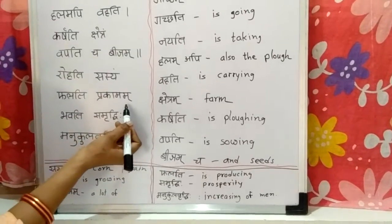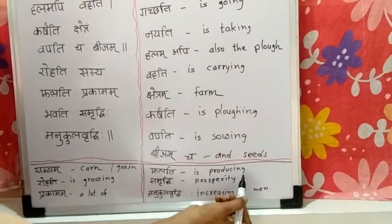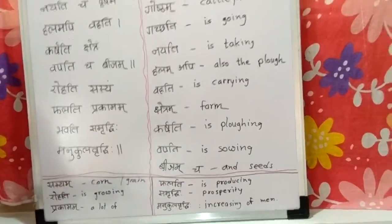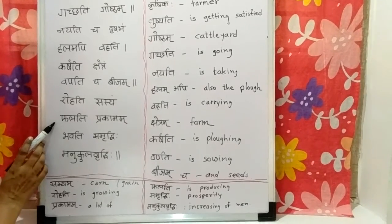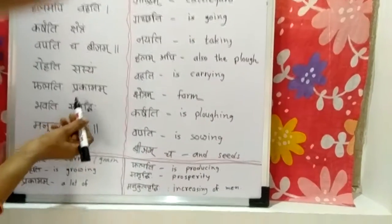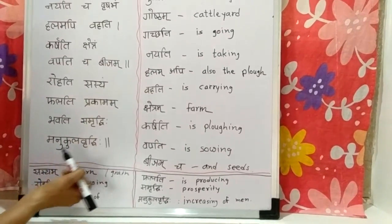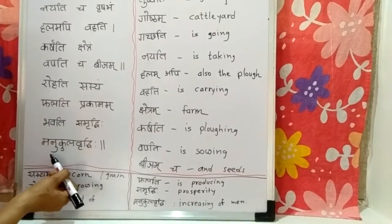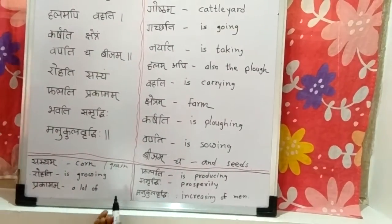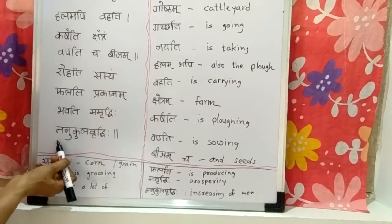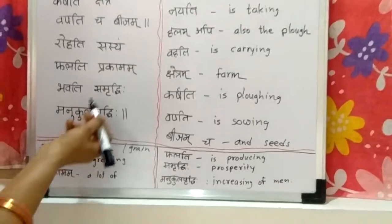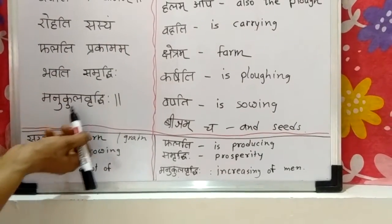Phalati Prakamam — Phalati means is producing and Prakamam means a lot of. So it is producing a lot. Bhavati Samruddhi, Manukul Vruddhi — Samruddhi means wealth or prosperity, and Manukul Vruddhi means the increasing of mankind. So prosperity and the human population are increasing — जो सम्रुद्धि होती है और मनुष्यों में जो बड़ोती होती है.